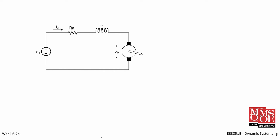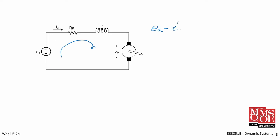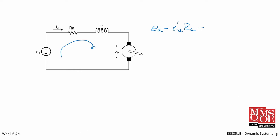Let's obtain the electrical equations for our motor. We can do KVL around this loop, and we see that E sub A minus the voltage drop across the winding resistance, minus the voltage drop across the inductance — recall the voltage drop across an inductor is V sub L equals L times dI/dt — minus the back EMF is all equal to zero.